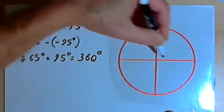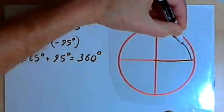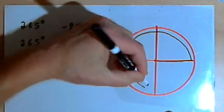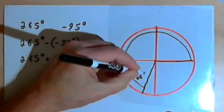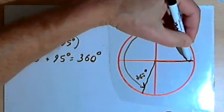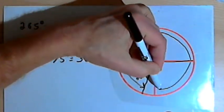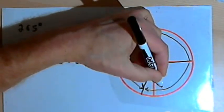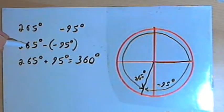Visually what we have is something like this. The positive angle went around counterclockwise through the first and second quadrants, ended up almost at the end of the third quadrant. So there's 265 degrees. The negative angle started in the standard position and went through the fourth quadrant, ended up in the third quadrant, exactly where the 265 degree angle is.